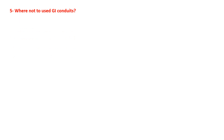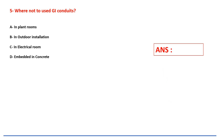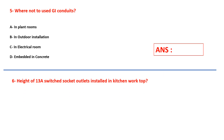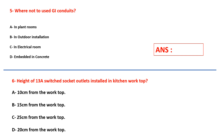Question number five: where should GI conduits NOT be used? In plant rooms, in outdoor installations, in electrical rooms, or embedded in concrete? Question number six: what is the height of a 13-ampere switched socket outlet installed in a kitchen worktop? 10 cm, 15 cm, 25 cm, or 20 cm?